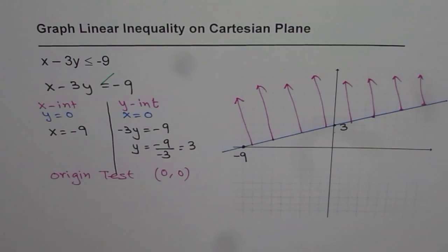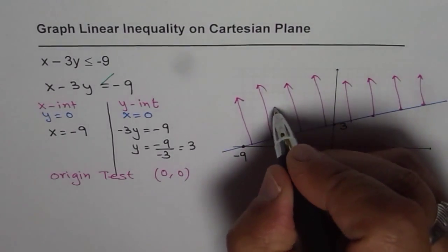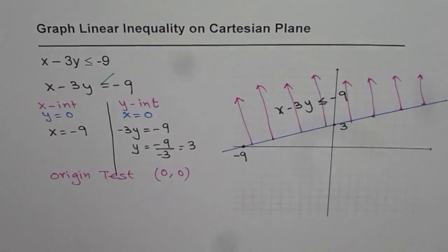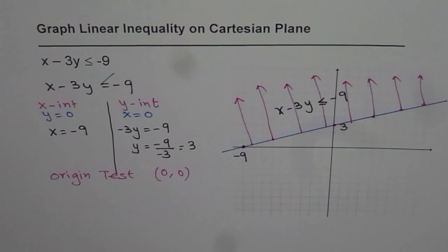That is the solution for x - 3y ≤ -9. That is how you can always graph linear inequality on Cartesian plane. This method of testing with the origin helps you to always get the right answer in the fastest way. Thank you and all the best.